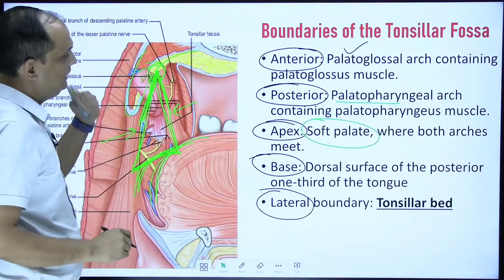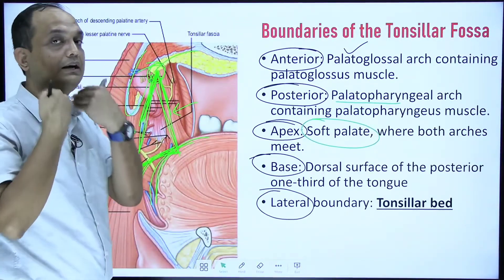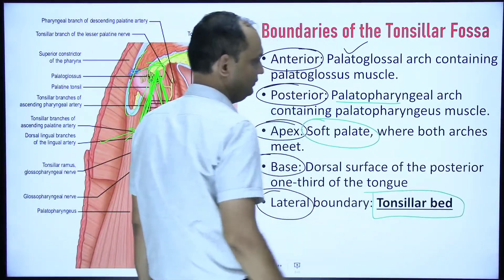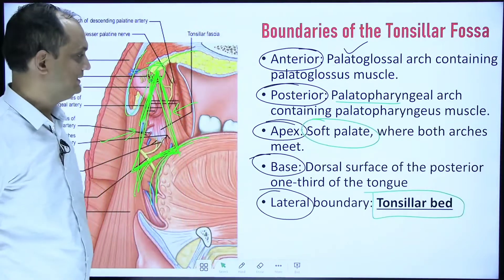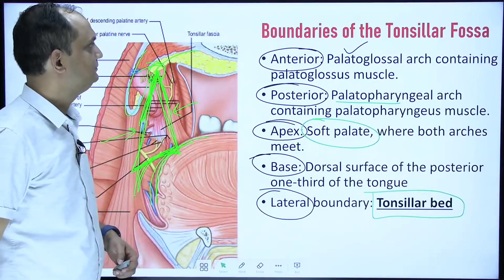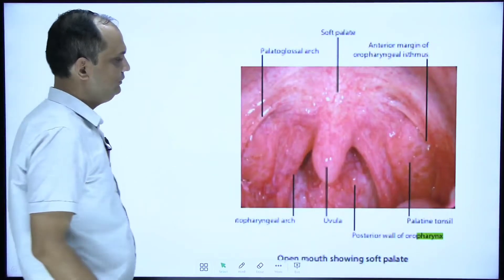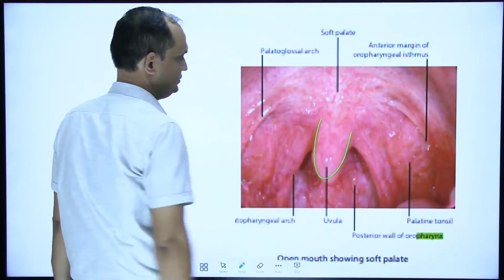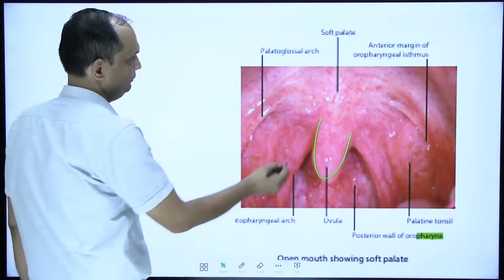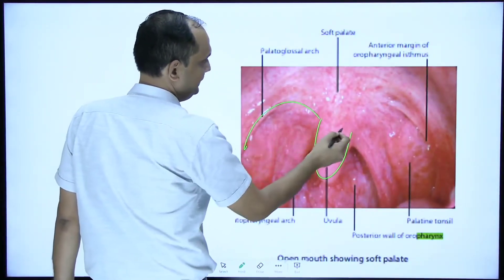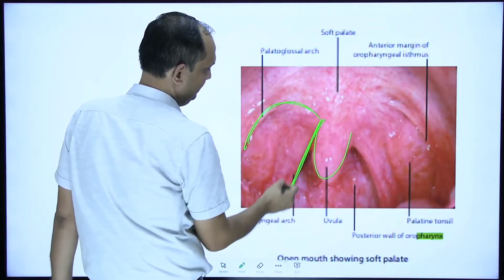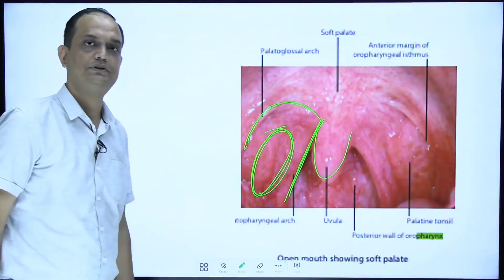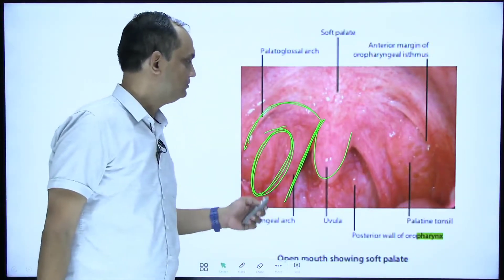So this triangular fossa has an anterior wall formed by the anterior pillar, a posterior wall formed by the posterior pillar, the apex towards the soft palate, and the base towards the tongue. The lateral wall is also known as the tonsillar bed. When you open the mouth and look in the mirror, the midline structure is the uvula, and from the uvula you have the anterior and posterior pillars with the enlarged almond-shaped palatine tonsil in between.